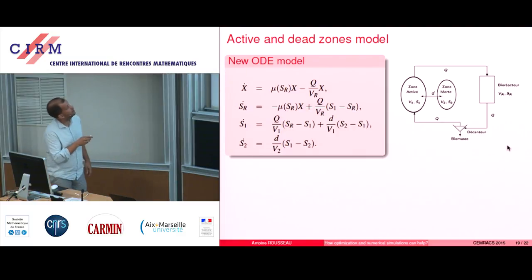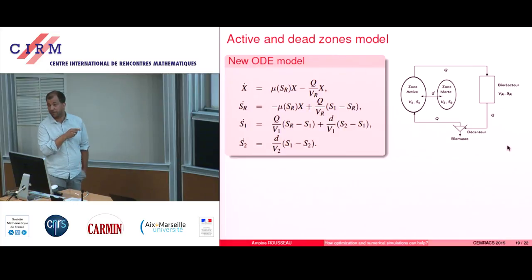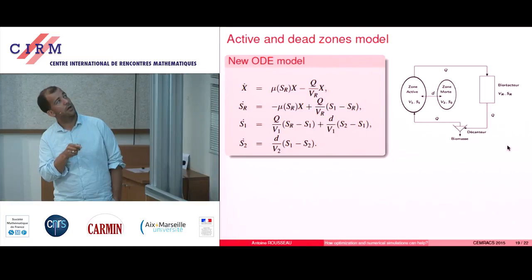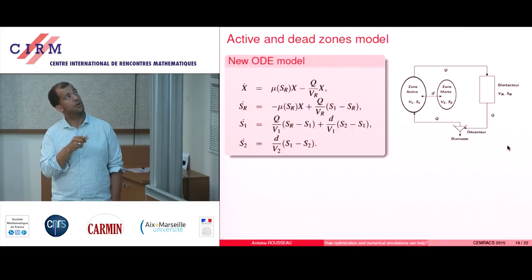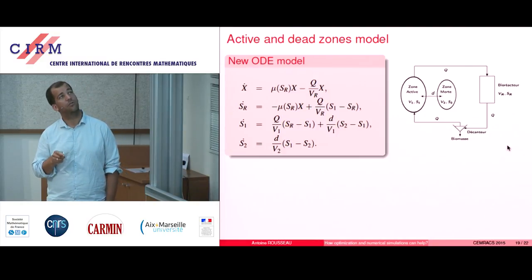The new ODE model is very comparable to the one we had before. Of course X in the bioreactor is the same. But we have two zones — we don't have SL anymore, but we have S1 and S2. S1 is comparable to the one we had because it is where the pump comes from and takes water from the lake. But we also have a passive zone, the dead zone, whose evolution is only provided by D, the diffusion parameter between the two zones.